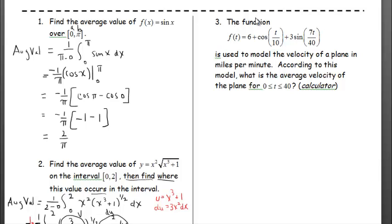For problem number three, we have the function f of t given by this equation. This equation is used to model the velocity of a plane in miles per minute. According to this model, what is the average velocity of the plane?